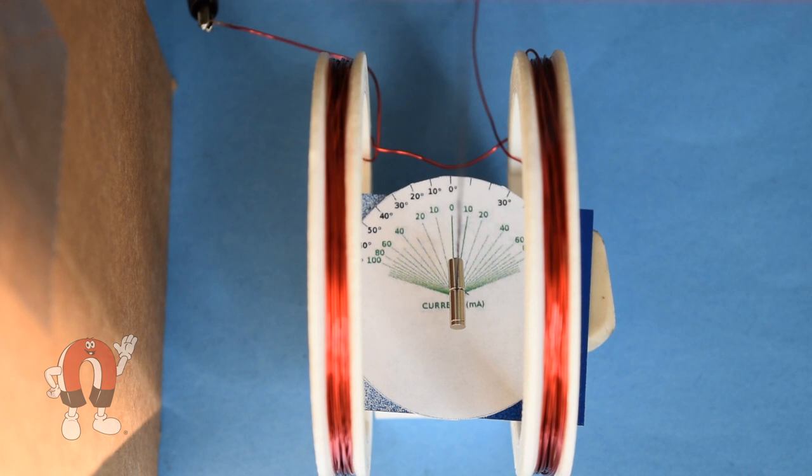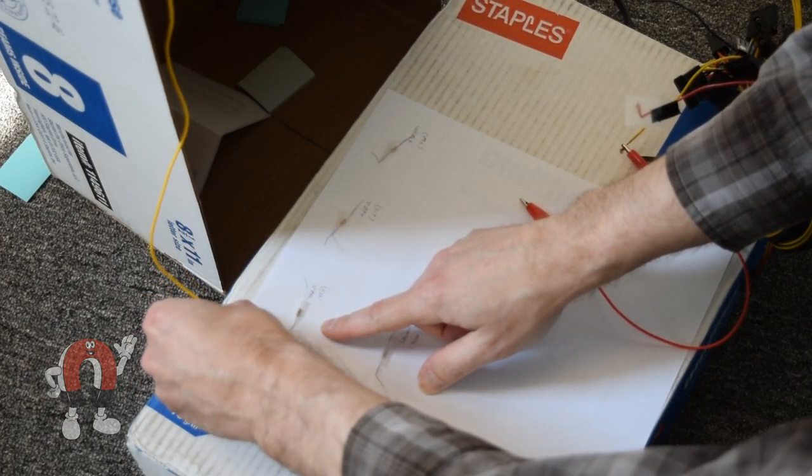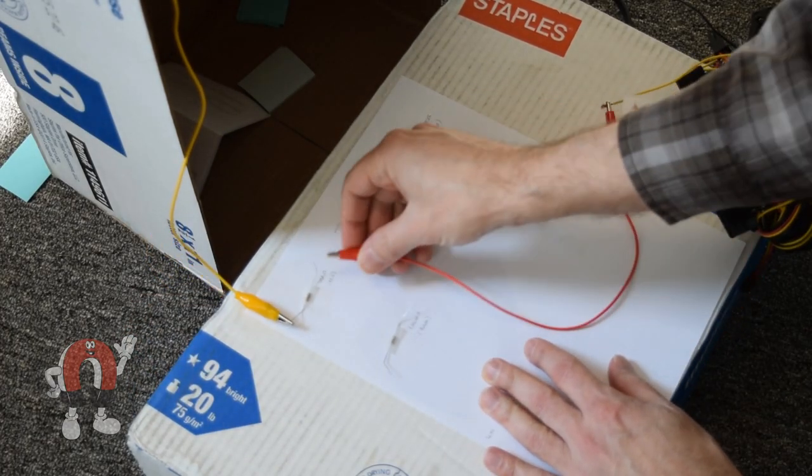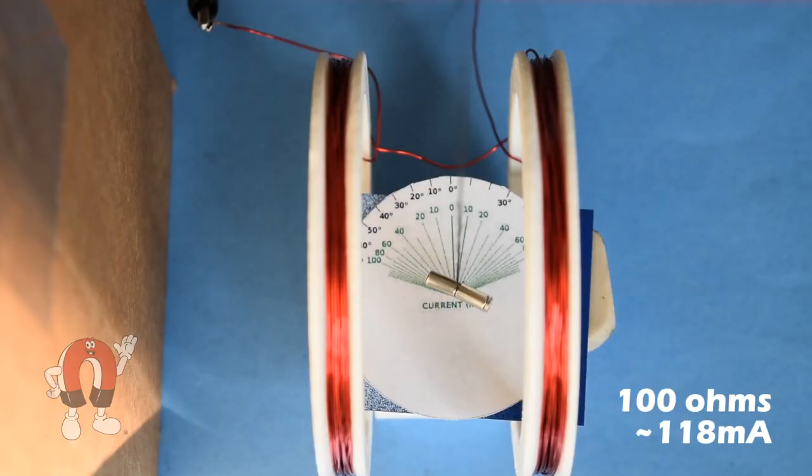Now we try it again with the hanging magnets. Just like the compass test, the 100 ohm resistor swings the magnets the most.